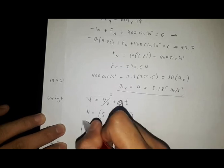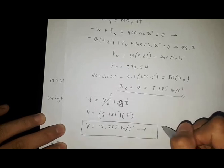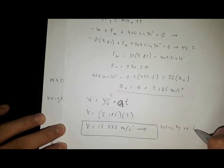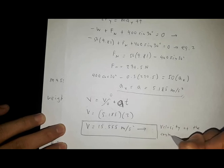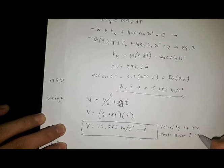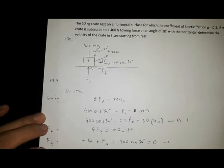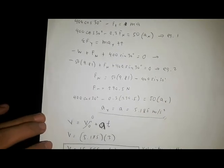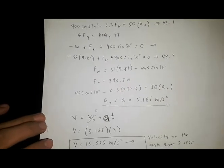The velocity of the crate after 3 seconds is 15.555 meters per second to the right. That is how we solve a problem involving the kinetics of a particle.